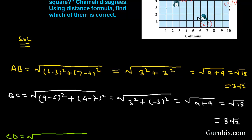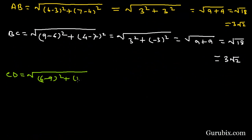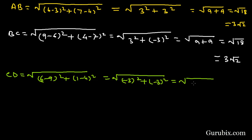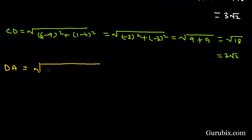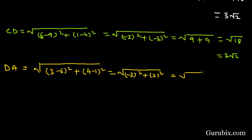Now we shall find the distance CD. CD equals square root of (6 minus 9) squared plus (1 minus 4) squared, which equals square root of (minus 3) squared plus (minus 3) squared, that is square root of 9 plus 9, which equals square root of 18, which equals 3√2. Now we shall find the distance DA. DA equals square root of (3 minus 6) squared plus (4 minus 1) squared, which also equals square root of 18, which equals 3√2.